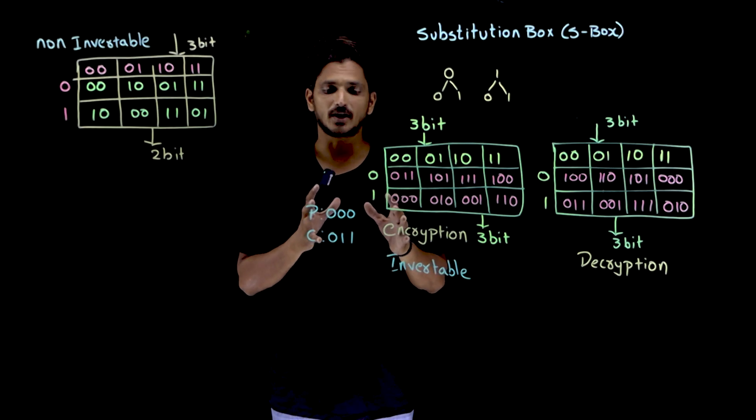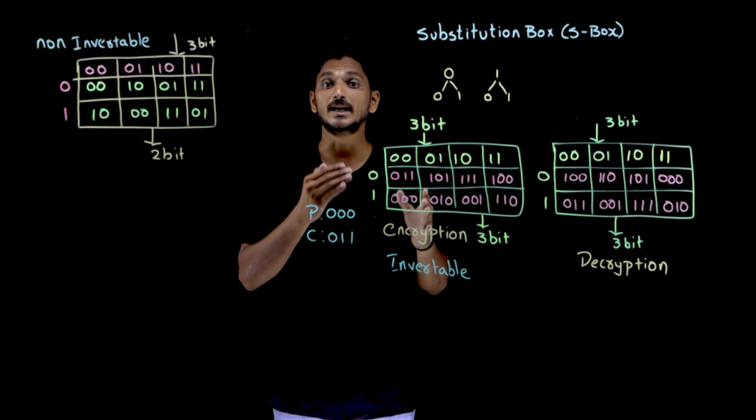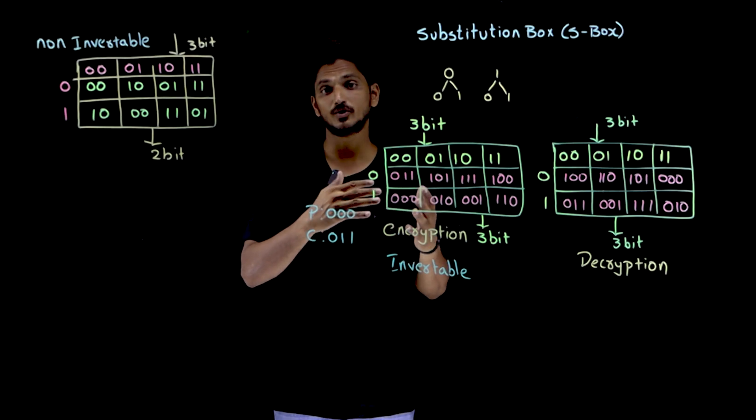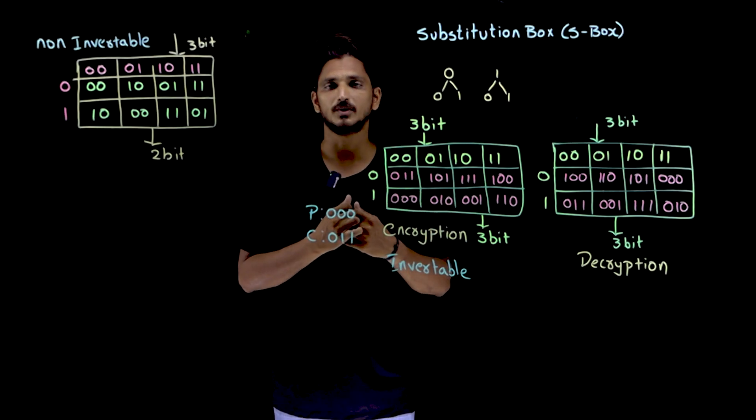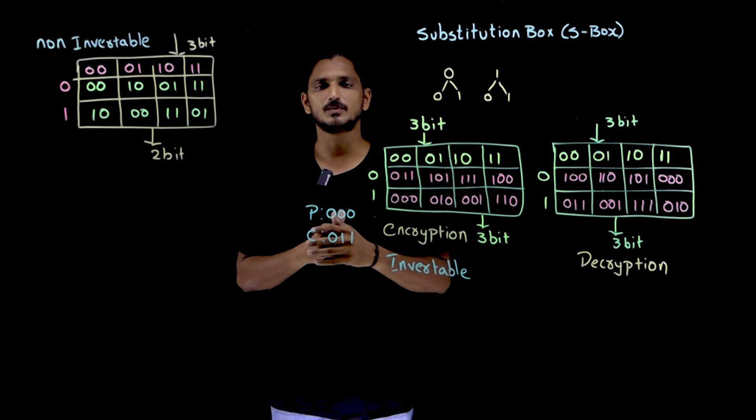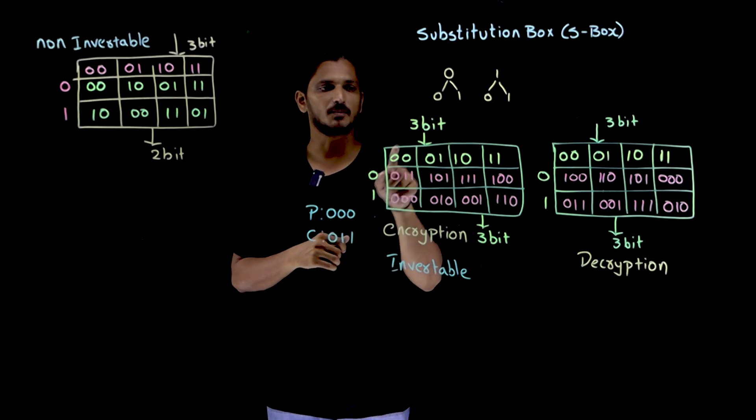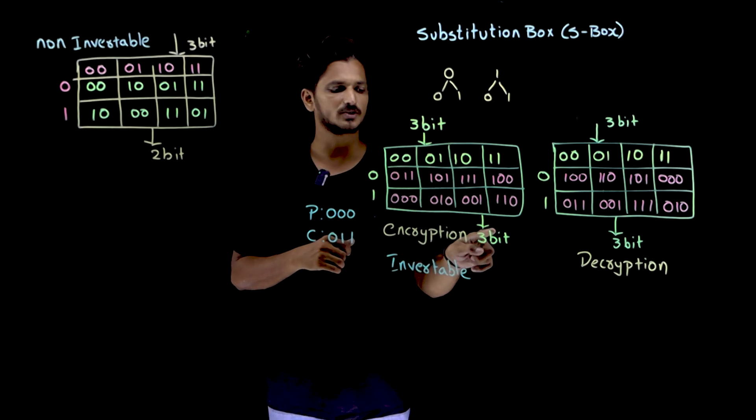So this is what substitution cipher means. And this is invertible. We are going to use both invertible and non-invertible. So this is invertible substitution cipher because the number of input bits are 3 and output bits are also 3.